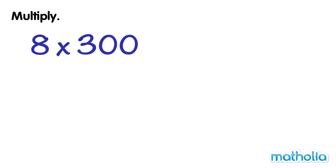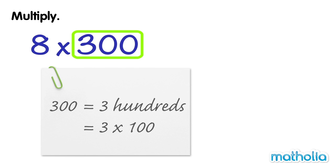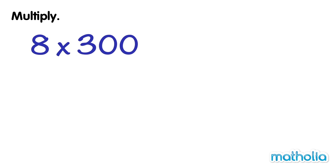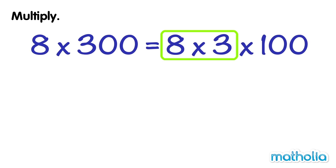Let's multiply 8 by 300. 300 is equal to 3 hundreds, which we can write as 3 times 100. So we can say 8 times 300 is equal to 8 times 3 times 100. 8 times 3 equals 24.